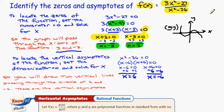Alright, the second part of this would be, now that we've located the zeros, we're now going to locate the vertical asymptotes of this particular function.